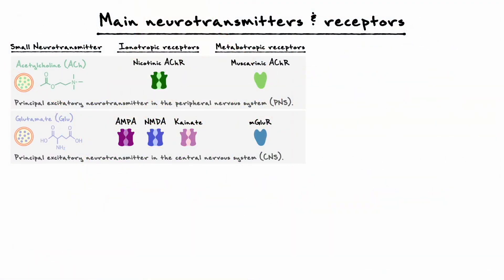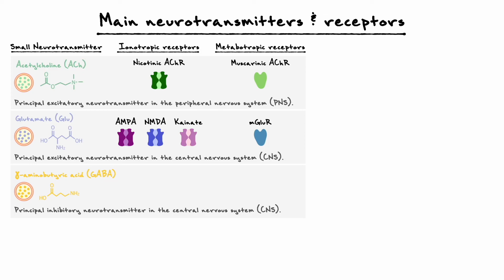With glutamate now covered, we can move on to the next neurotransmitter. Neurons in the central nervous system can have an excitatory or inhibitory output on the postsynaptic cell. Given that glutamate is the main excitatory neurotransmitter, we now need to consider what is the main inhibitory neurotransmitter. The main inhibitory neurotransmitter in the central nervous system is gamma-aminobutyric acid, or simply GABA.